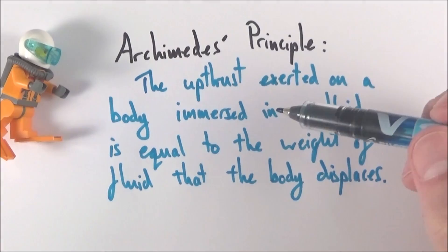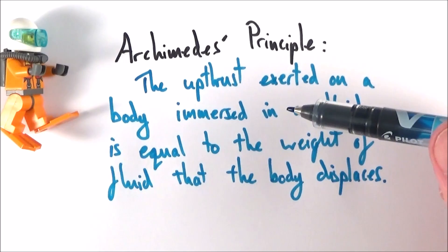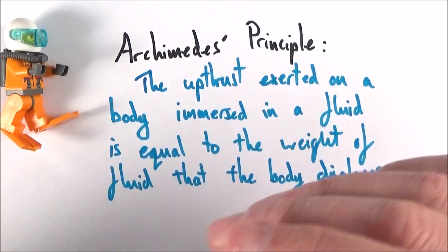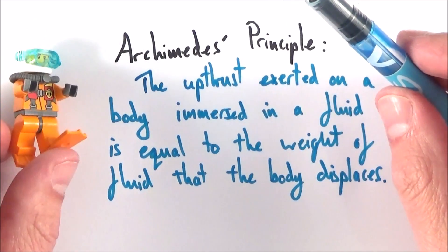So Archimedes principle basically states that the size of this upthrust on an object or on a body immersed in a fluid—and this could either be partially or completely submerged—is equal to the weight of fluid that that body displaces.